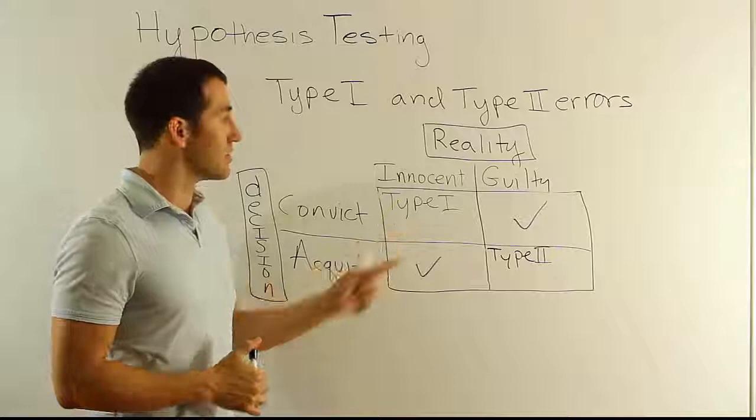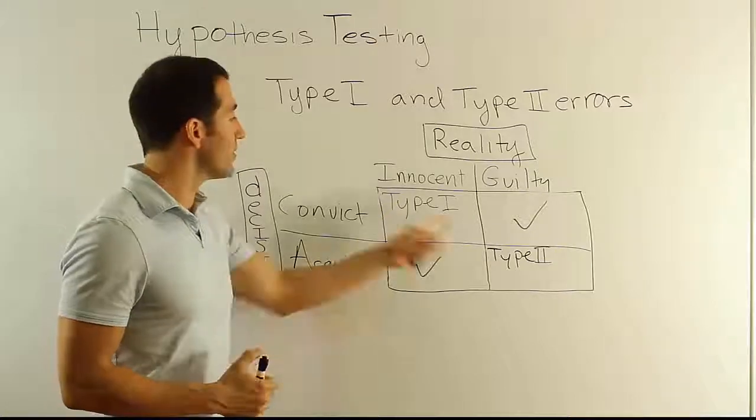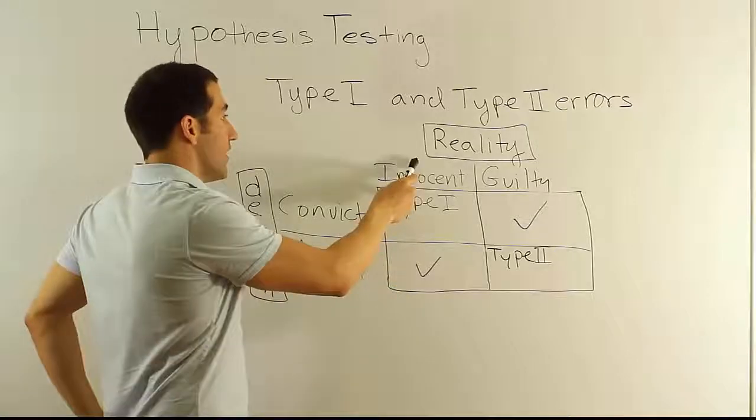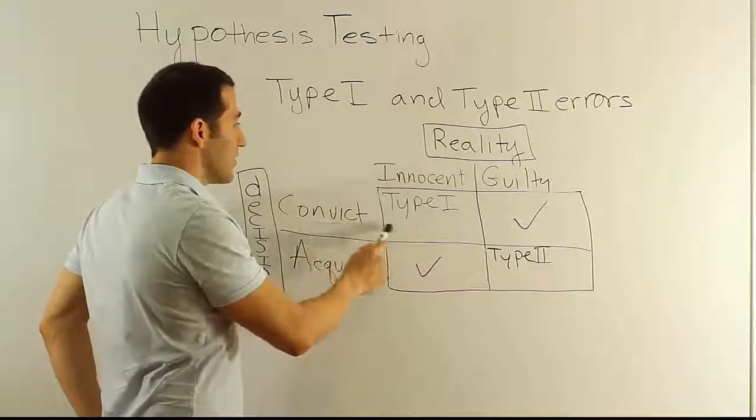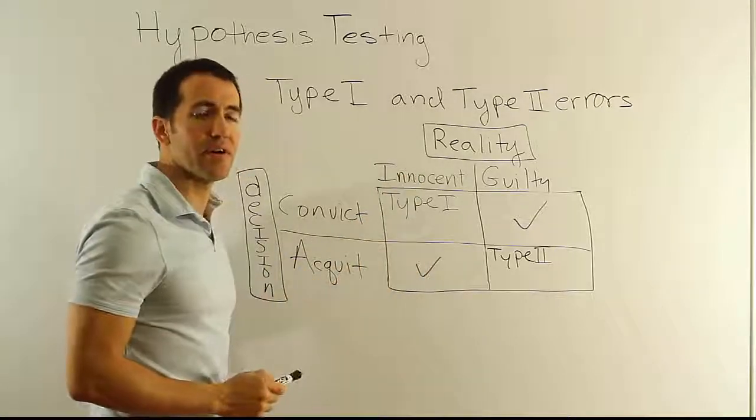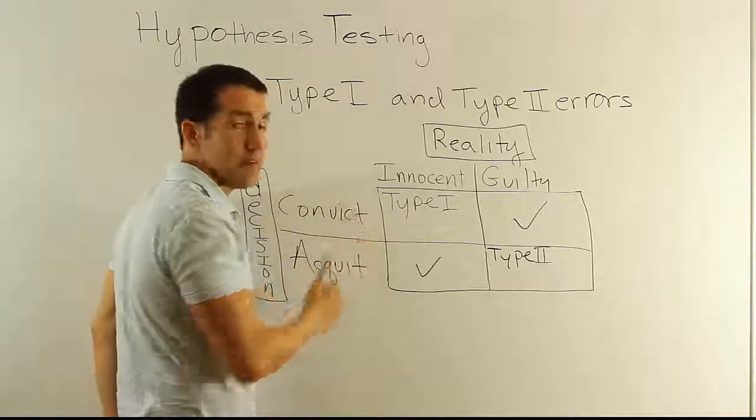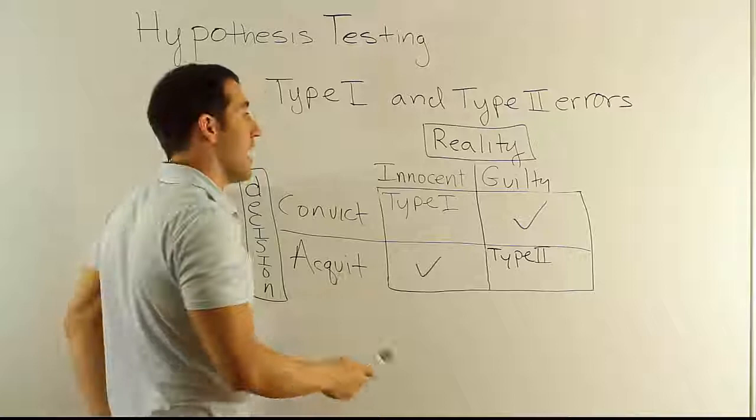Alright, so let's see if this works out to be the same thing. Two mistakes, two correct decisions. Let's see if it's correct. In reality the person is innocent, you convict them. That's a Type I error. It's an error, it's a mistake. If a person is innocent you shouldn't convict them. That's an error, and a major error at that.